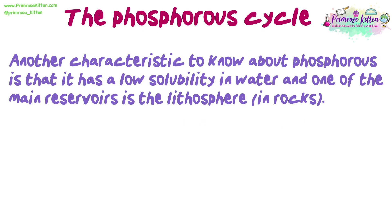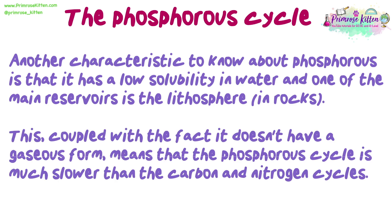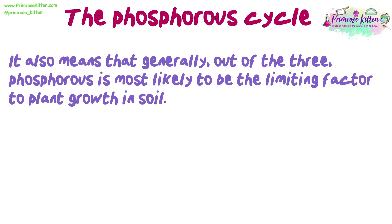Another characteristic to know about phosphorus is that it has a low solubility in water, and one of the main reservoirs is the lithosphere in rocks. This, coupled with the fact that it doesn't have a gaseous form, means that the phosphorus cycle is much slower than the carbon and nitrogen cycles. It also means that, generally, out of the three, phosphorus is most likely to be the limiting factor to plant growth in soil.